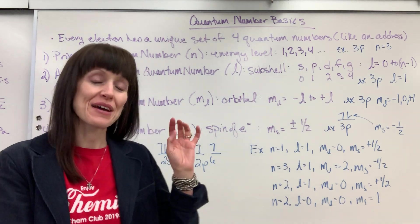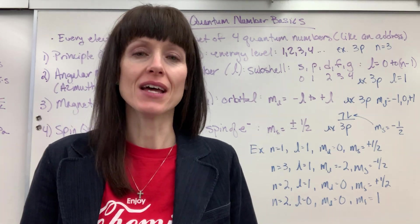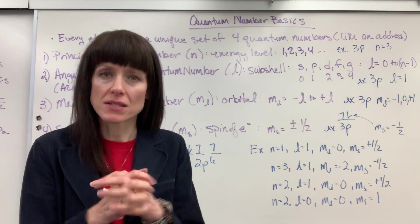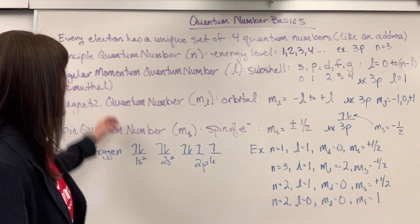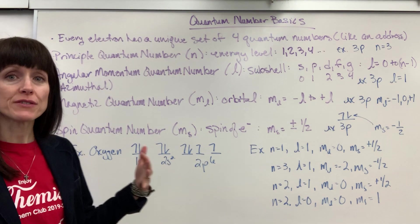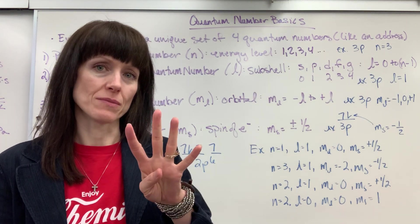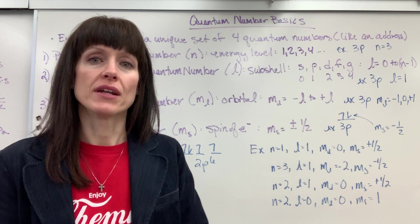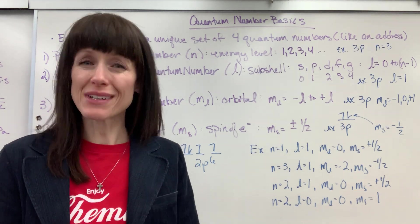We are going to talk about quantum numbers. I'm going to give you the basics. Don't be intimidated by this — I promise you can do it. This will make sense. Here's the definition of what drives quantum numbers: every electron has a unique set of four quantum numbers. There are four quantum numbers and every electron will have a different combination of those four quantum numbers.